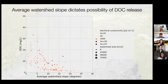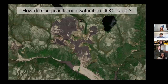Average watershed slope is definitely a good predictor of DOC. The striking thing is that if you look at the electrical conductivity on top of that, we see some outliers that are quite high in their DOC and also quite high in their electrical conductivity. This comes back to what I started with before: along the Peel Plateau, there's a lot of slumping going on. As you may remember from the first slide, there's a much higher electrical conductivity measured in the main stem there. This is probably because of a lot of slumping activity and erosion going on on the Peel Plateau because of degrading permafrost.